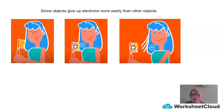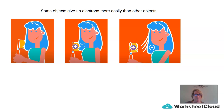Here we have a diagram of a girl brushing her hair. As she brushes her hair, electrons are transferred from the brush to her hair. The brush has lost electrons to her hair, so the brush bristles become positively charged and the hair becomes negatively charged. Now we have the brush with a positive charge — when the brush is brought close to the hair, the hair starts to stand up and move closer to the brush. Let's see if we can work out why.